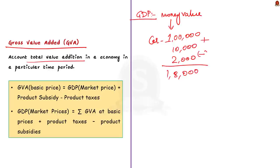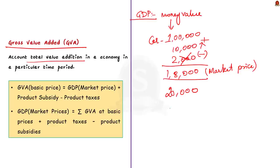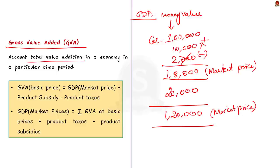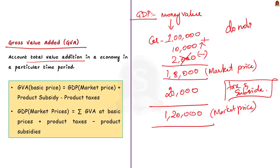This 1 lakh 8,000 will be added to the GDP calculation. But if the government increases taxes to 20,000 and stops the subsidy, the market price becomes 1 lakh 20,000 — and this higher value is added to GDP instead. So for the same car, based on government tax and subsidy, the GDP value changes. This means GDP in some cases does not truly reflect actual production in the economy, which is why GVA was introduced.